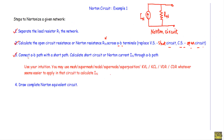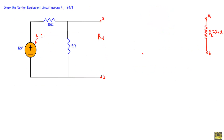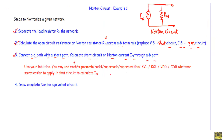To calculate the Norton current, we first connect the A-B terminals with a short path, then calculate the short circuit current through that A-B path — this is the Norton current. You may use mesh analysis, super mesh, nodal analysis, superposition, KVL, KCL, voltage divider rule, or current divider rule. Use your intuition to find which method is easiest for that specific circuit.